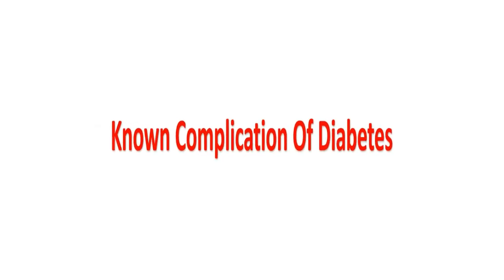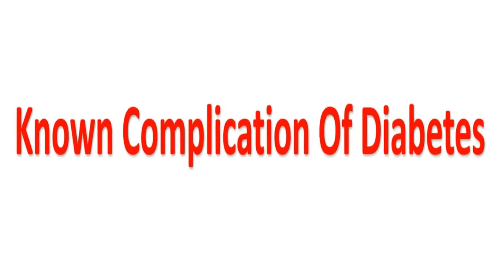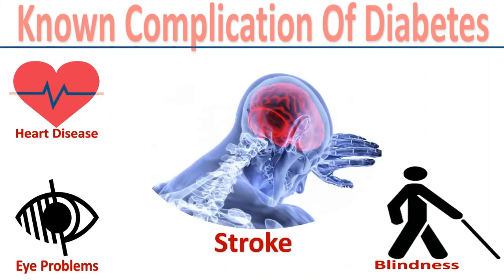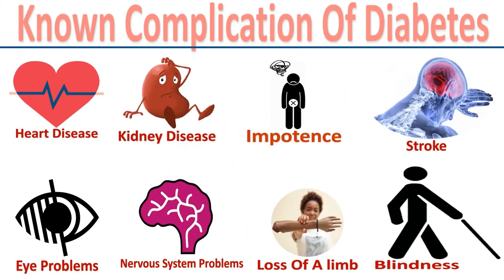Known complications of diabetes include eye problems, blindness, heart disease, stroke, nervous system problems, loss of a limb, kidney disease, and impotence.